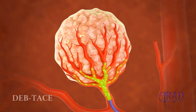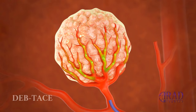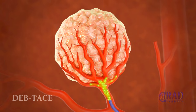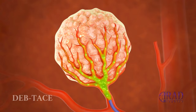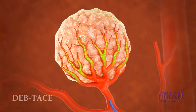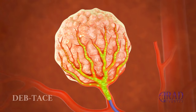For drug-eluting beads chemoembolization, only small beads which carry chemotherapy agents are injected in pulsatile fashion through the microcatheter until complete stasis is achieved. These beads elute chemotherapy agents after settling within the intratumoral vasculature bed while blocking blood flow to the tumor cells.